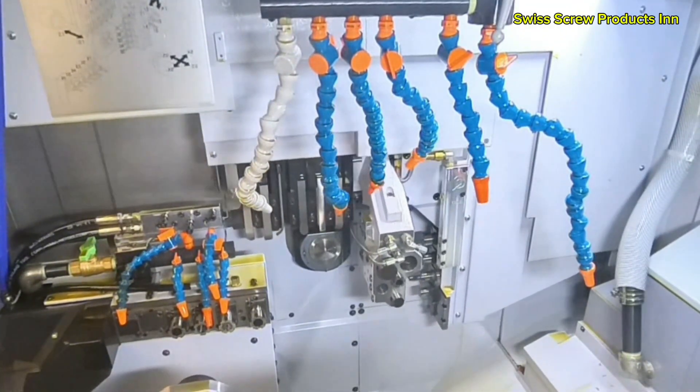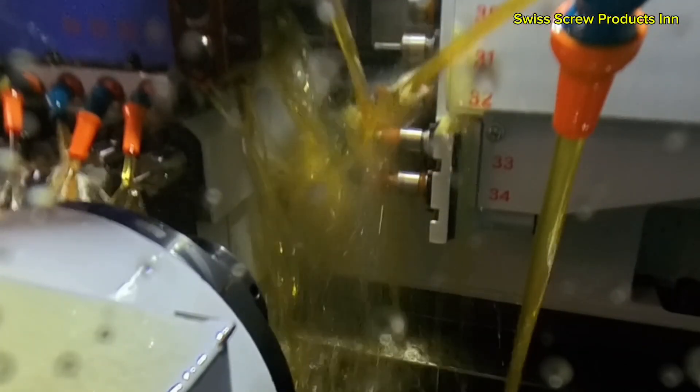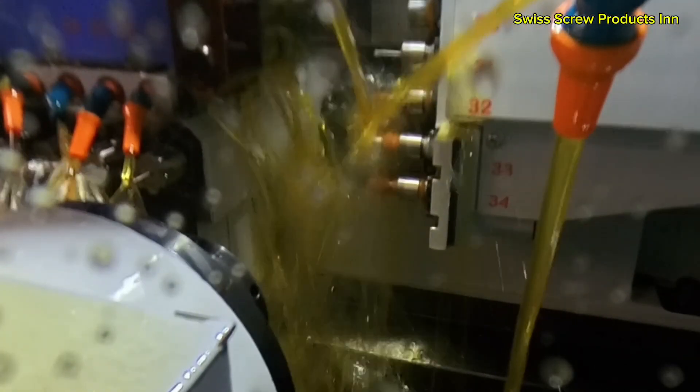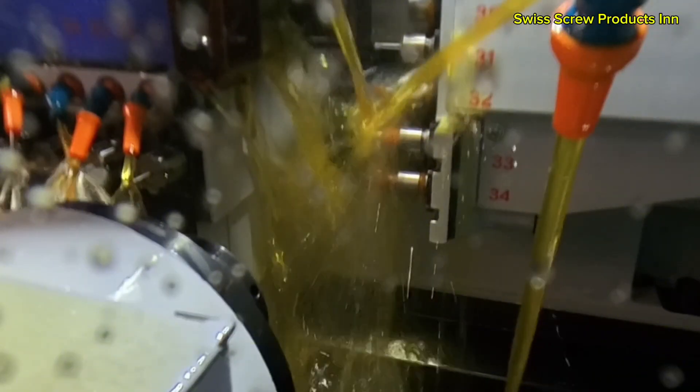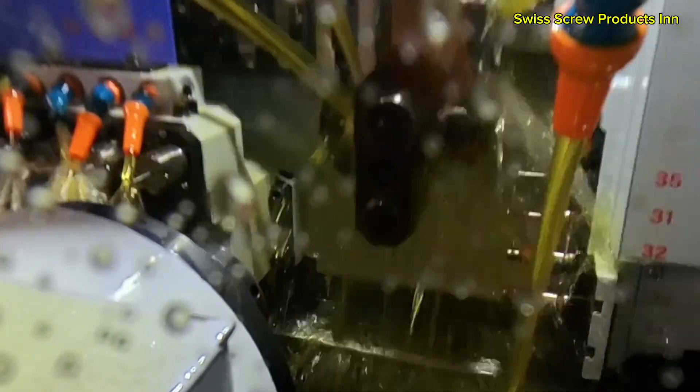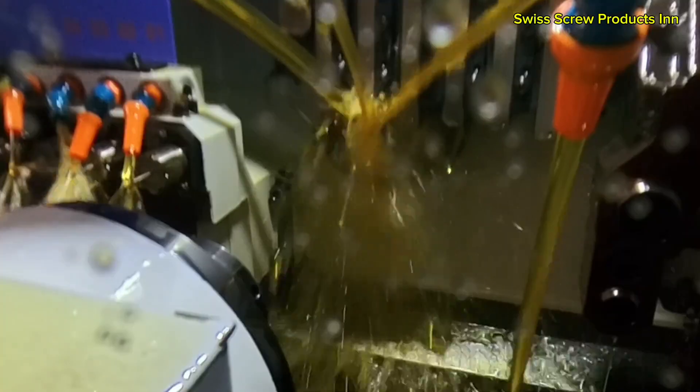With these axes, a Swiss machine can perform operations on multiple sides of the part, even simultaneously. That means the front of the part might be getting turned while the back is drilled and the side is being milled, all in one synchronized cycle.